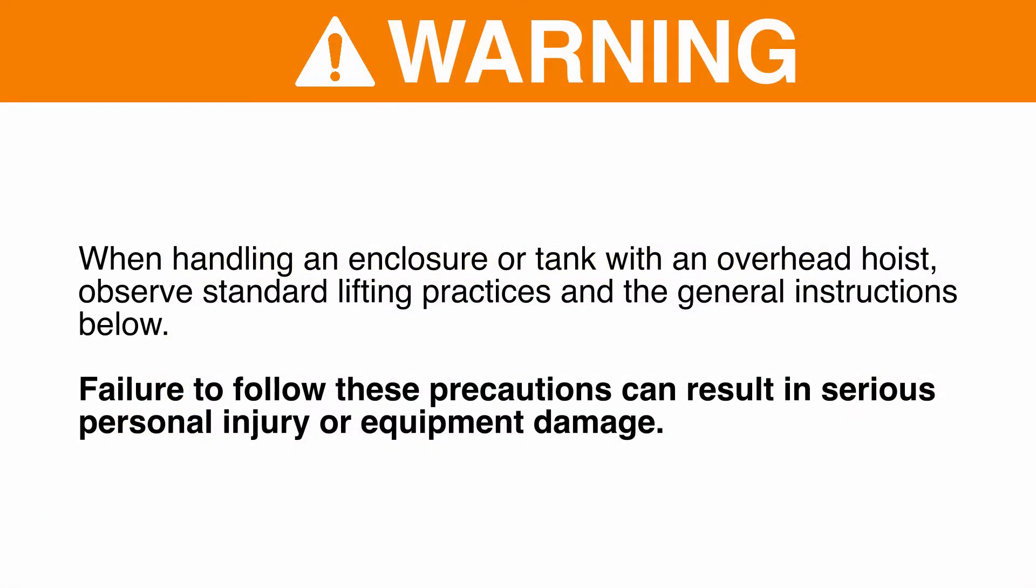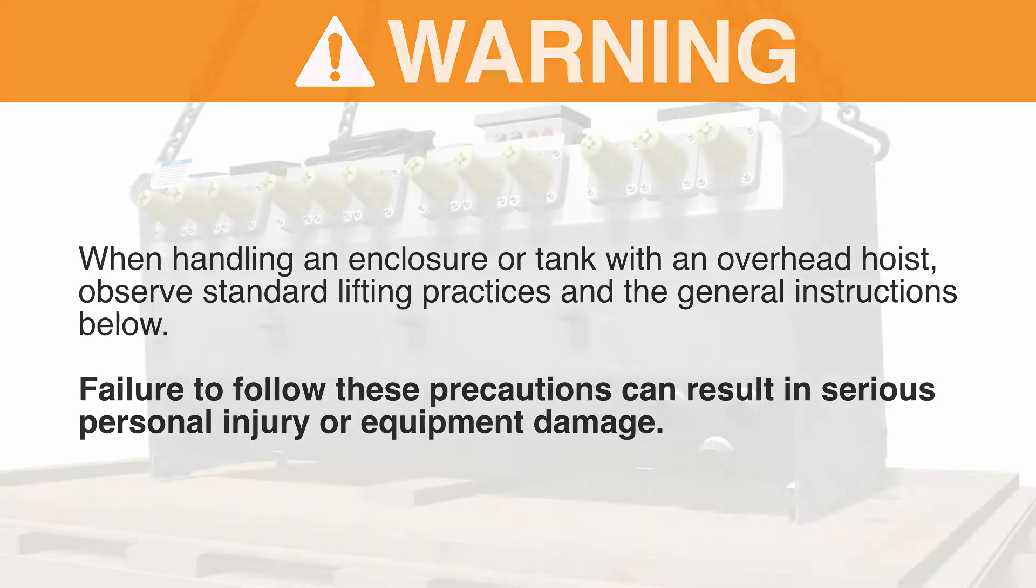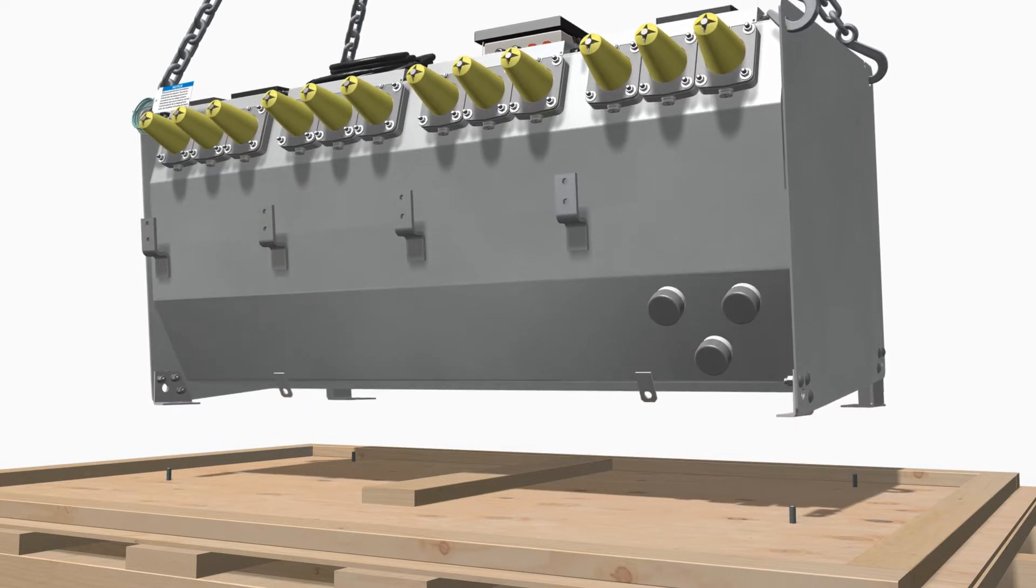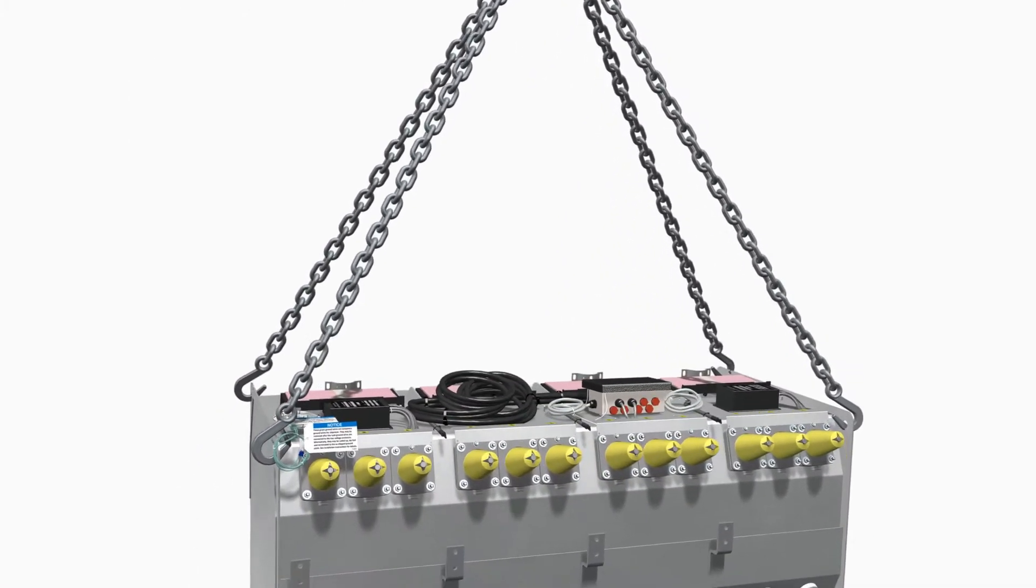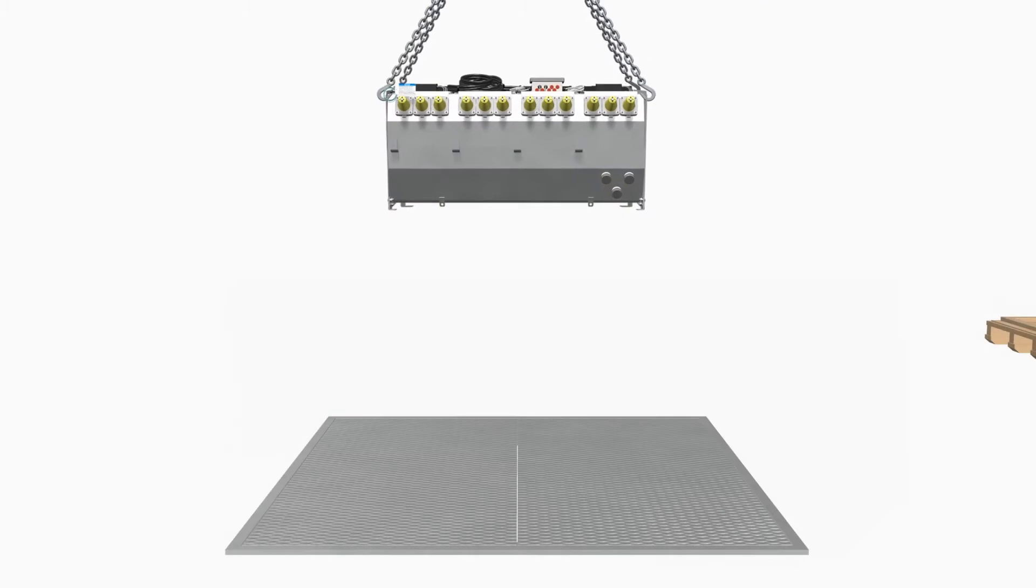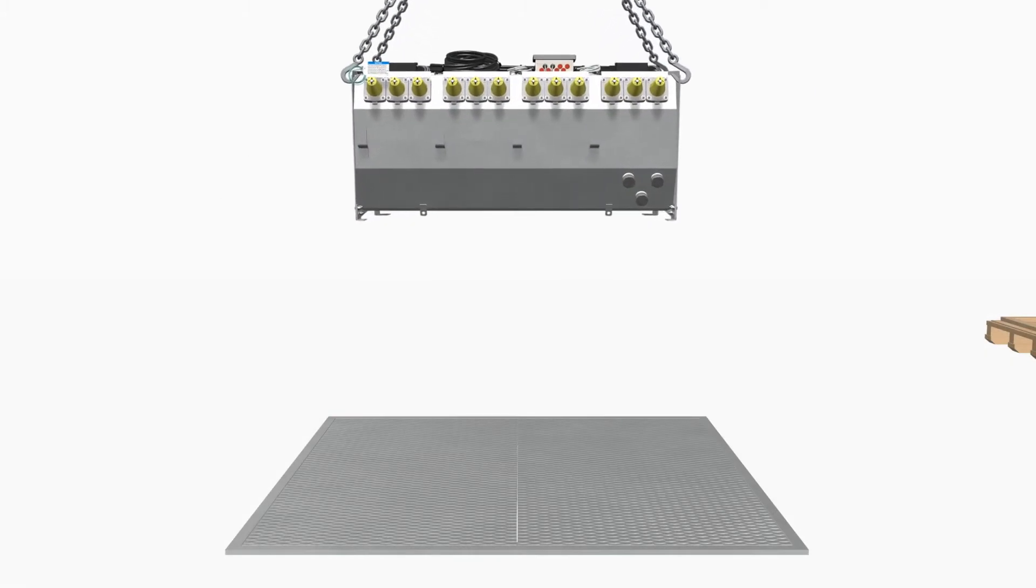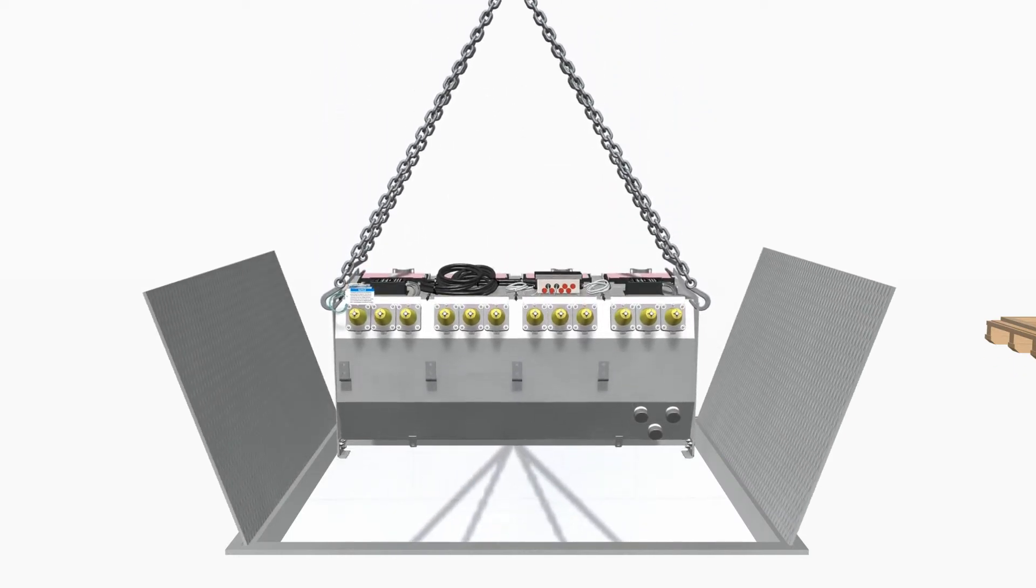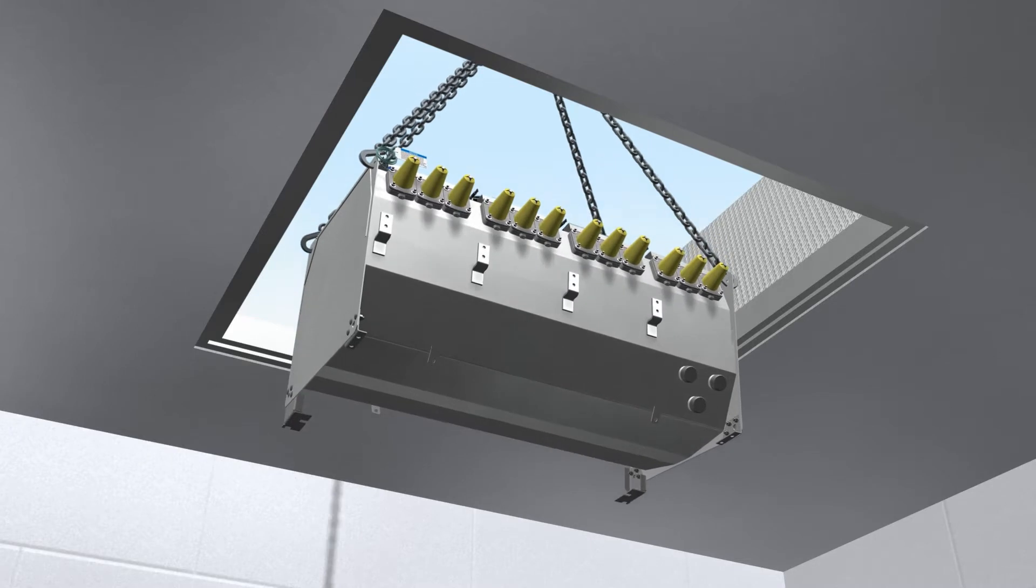When handling an enclosure or tank with an overhead hoist, observe standard lifting practices and the general instructions. Use six-foot, 183-centimeter or longer hoist slings of equal length to prevent damaging the Vista switchgear enclosure or tank during lifting. Arrange the hoist slings so the lifting forces are equally distributed between the lifting tabs. Avoid sudden starts and stops.